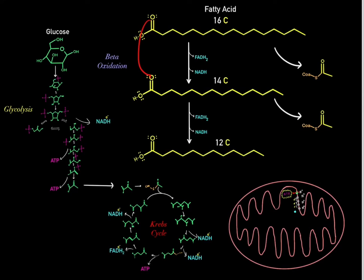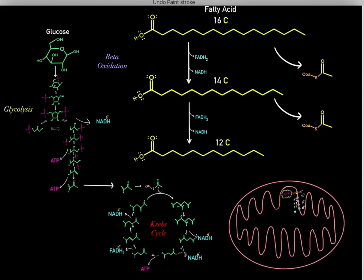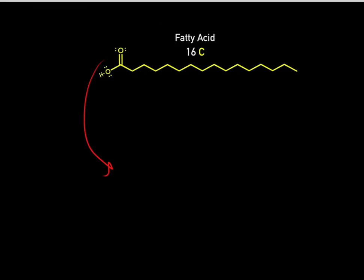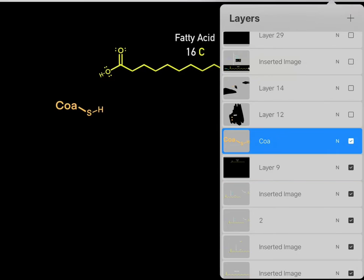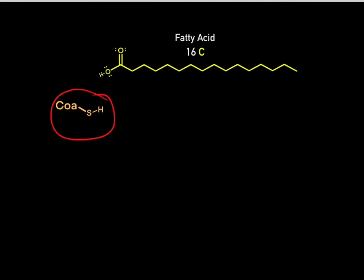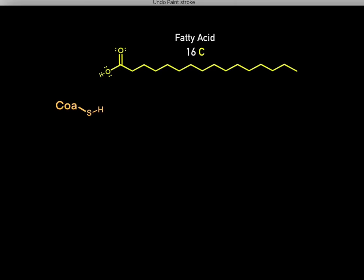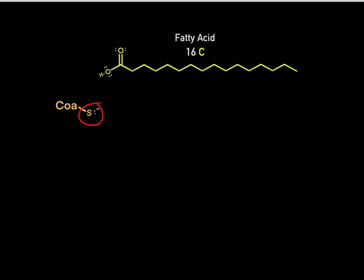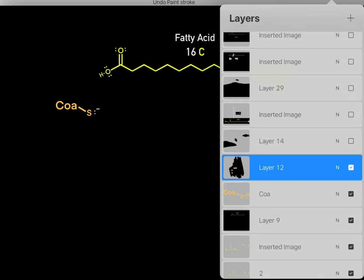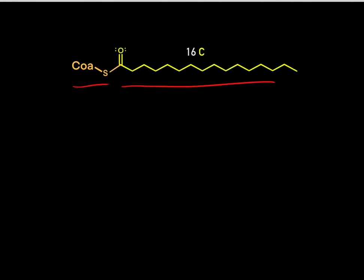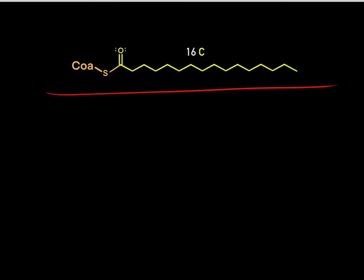How exactly do we go through beta-oxidation to produce these reduced cofactors? The first step is to take a coenzyme A compound. Once we form this coenzyme A compound, we deprotonate the hydrogen from the thiol-sulfur group, leaving a sulfur anion that is very nucleophilic. This sulfur anion nucleophilically attacks the electrophilic carbonyl carbon, forming a bond, breaking another bond, and the electrons fall on the oxygen — forming acyl-CoA. Once we form acyl-CoA, we can begin beta-oxidation.